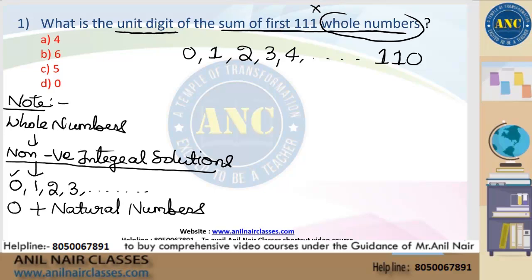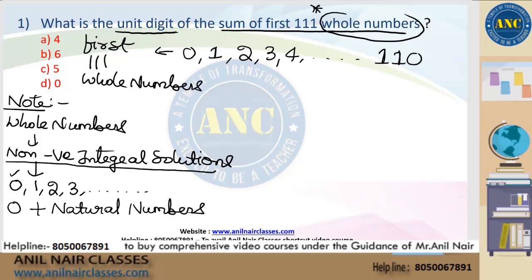Put a star mark on the keyword 'whole number.' Whole numbers start with 0. The second important keyword is 'unit digit' — we are not finding the full sum, only the unit digit. Since 0 plus any number does not change the unit digit, we can omit 0 from our calculation.